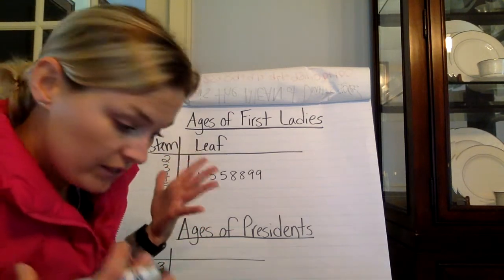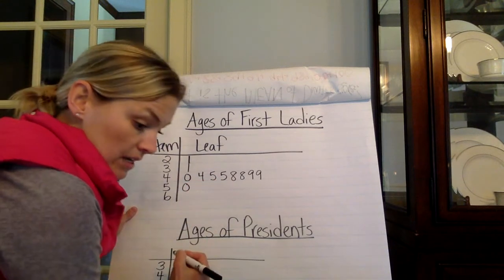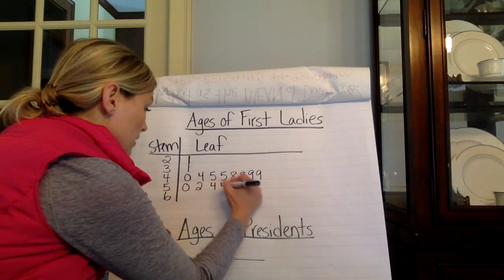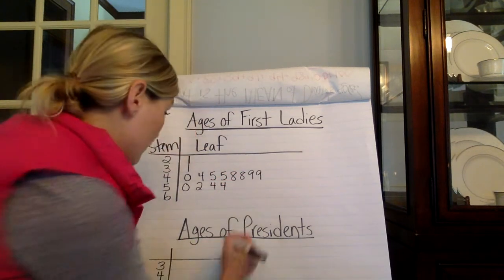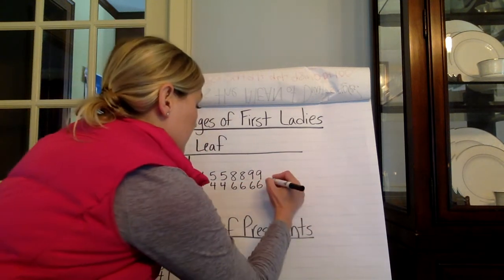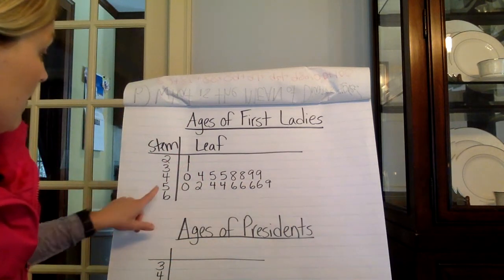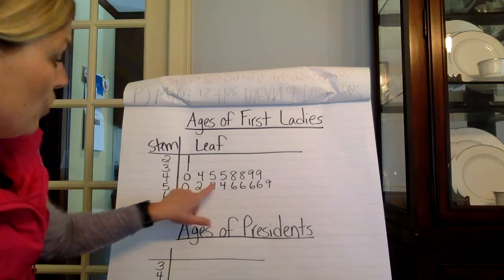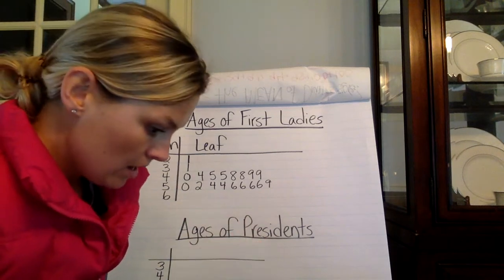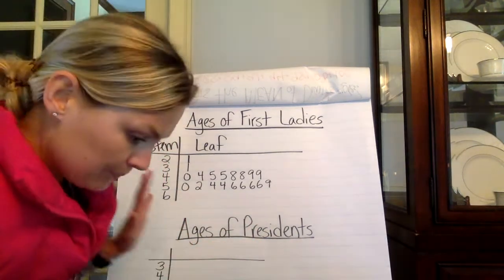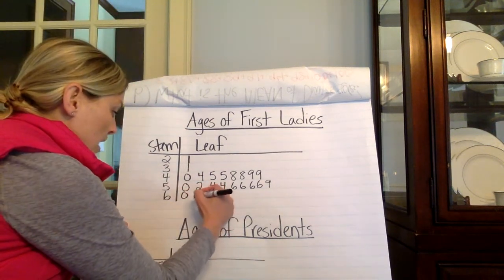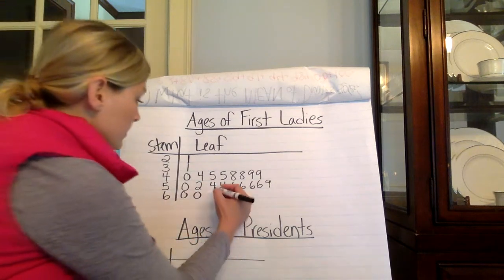On to the 50s — there were quite a few who were in their 50s as well. We have one who is 50, 52, two that were 54, four that were 56, and one that was 59. This is how old they were when their husband took office at the inauguration. And then we have three first ladies who were in their 60s: two that were 60 on the dot, and then one that was 63.